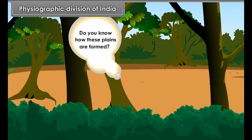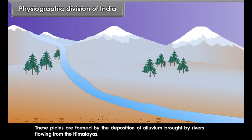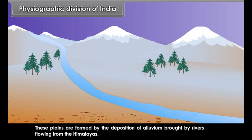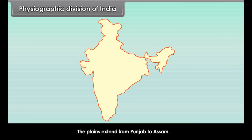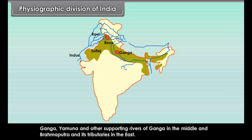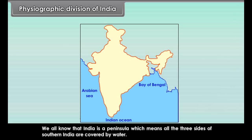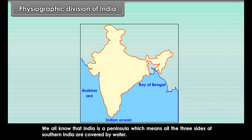To the south of the Himalayas there is a vast stretch of relatively flat surface called the Northern Plains or Great Indian Plains. These plains are formed by the deposition of alluvium brought by rivers flowing from the Himalayas. The plains extend from Punjab to Assam, drained by rivers like the Sutlej, Beas and Ravi in the west, and Ganga, Yamuna in the middle.